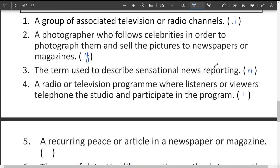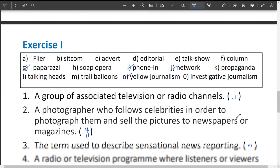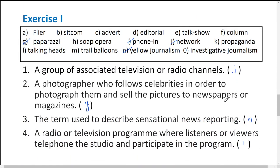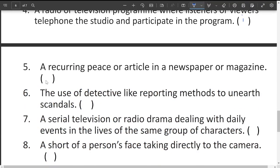A recurring piece or article in a newspaper or magazine is called a column. We say newspaper columns — a small piece of article or writing is called a column.